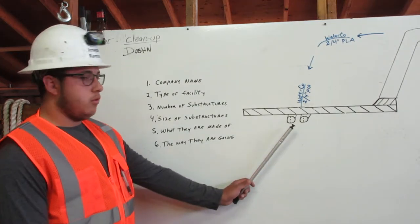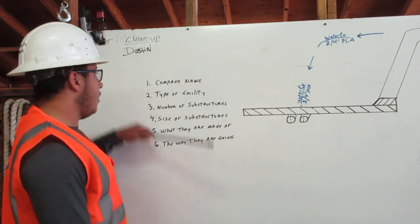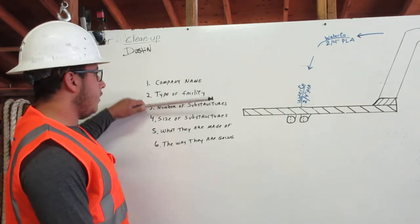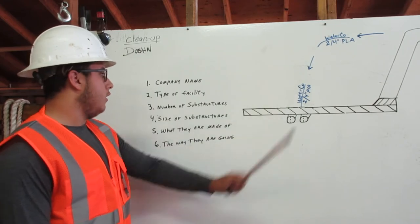Here's our road and our two substructures that you cannot see. The company name is Water Co. Type of facility, because it is blue, we know that it is a water facility.